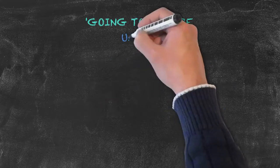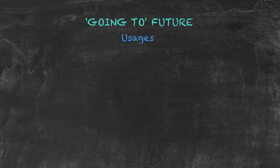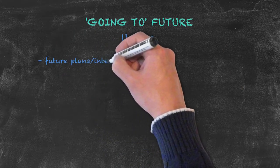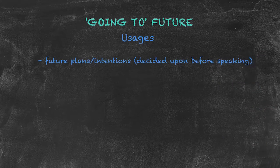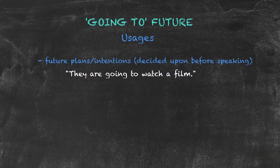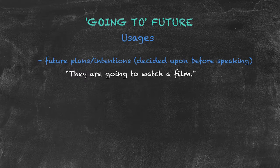There are two usages for the going to future tense. The first is to indicate future plans with intentions that have been decided upon before speaking. For example, they are going to watch a film. I know that they've decided to go watch a film, and I want to make a statement about them. I can say, they are going to watch a film.